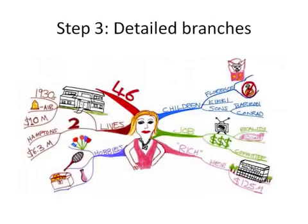Now it's time to add more detail by adding smaller branches, keywords, pictures, and always using colour. If you look in the top right hand corner of the mind map, you can see more detail about the children. And going around clockwise, you can see more branches added for each category.